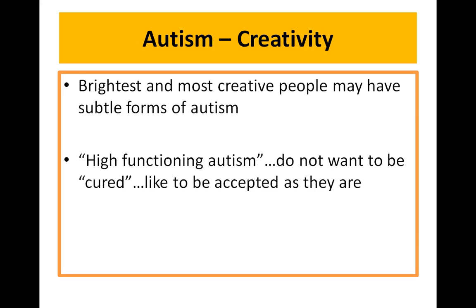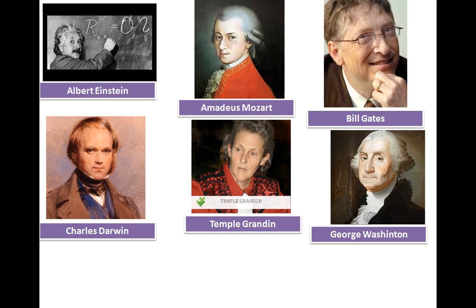We know that autism is a disabling condition. However, there might be bright and very creative people who have very subtle forms of autism — what's called high-functioning autism. Some believe they don't want to be cured; they like to be accepted as they are.